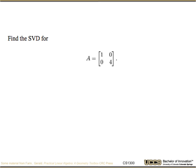So now let's apply that in a real problem. Here's a very small matrix. A is a 2 by 2, [1, 0; 0, 4]. Find the SVD for this matrix. Pause the video. Work on this until you actually have the answer for what is the singular value decomposition of the matrix.